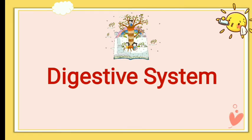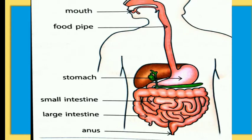So, digestive system. There are many organs which are responsible for the digestive system. These are: mouth, food pipe, stomach, small intestine, large intestine, and anus.